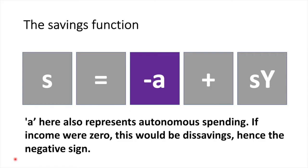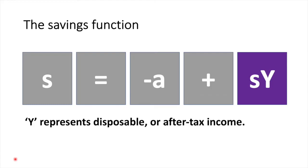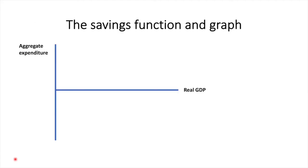In the savings function, A also represents autonomous spending. If income were zero, this would be dissavings, hence the negative sign. S represents the marginal propensity to save — the additional amount of savings that occurs when disposable income rises. Y represents disposable or after-tax income. The savings function has a negative y-intercept because of the dissavings element at zero. The money spent when income is zero is either dissavings or borrowing, resulting in a negative level of savings. The slope of the savings function is determined by the marginal propensity to save, or variable S.